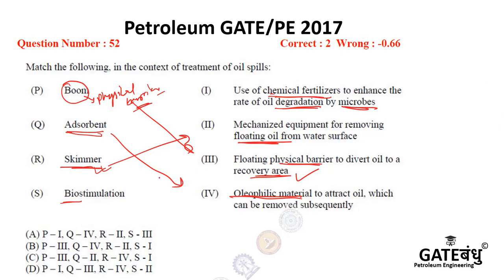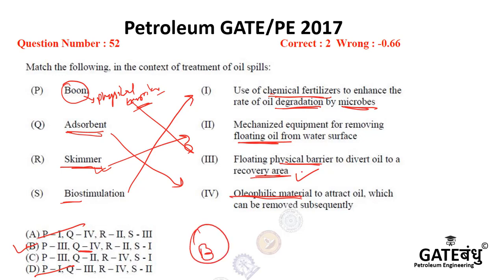For biodegradation, that will be 1. For S, that will be 1; for P, that will be 3 — this is cancelled out. P equals 3, and for Q, that will be 4. So the right option is B.